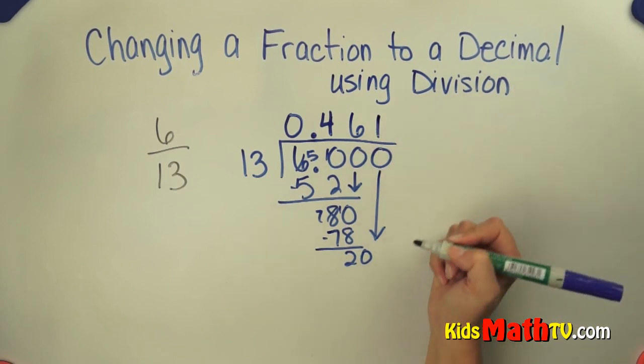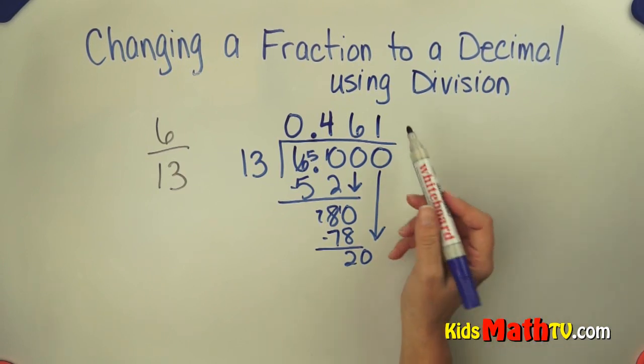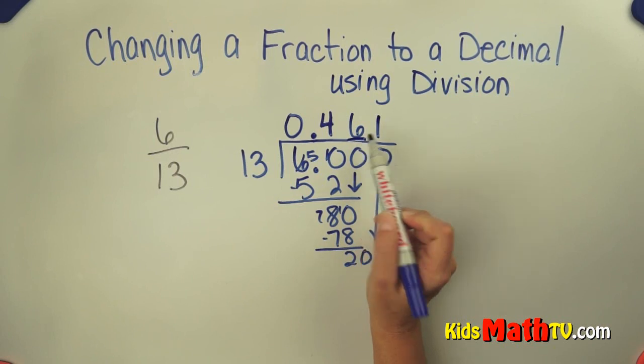Subtract and bring down another zero. And there's only one 13 in 20. I could subtract and keep going if I wanted, but this is as far as I am going to go because I want to round it to the nearest hundredths place.